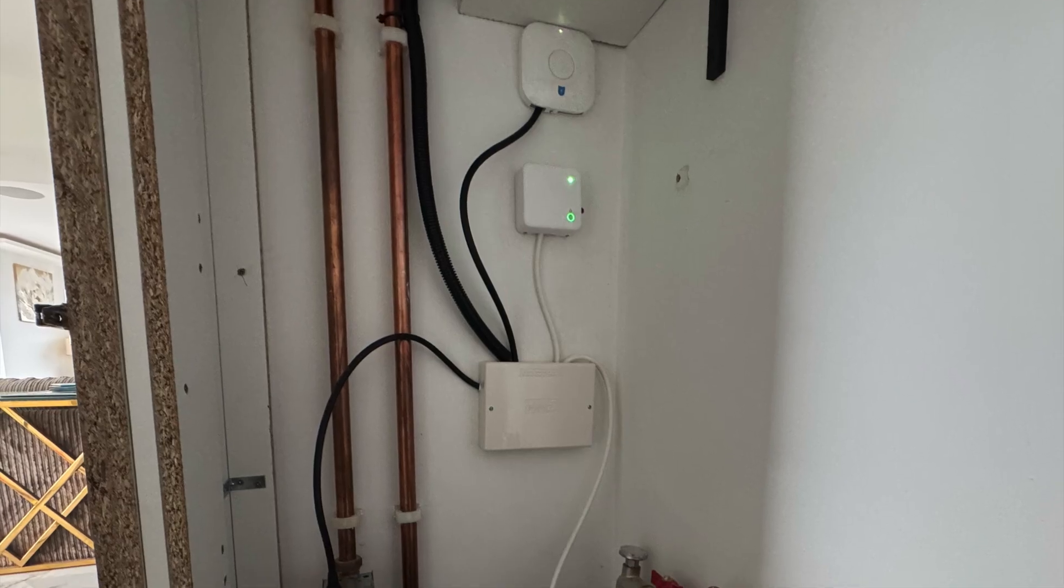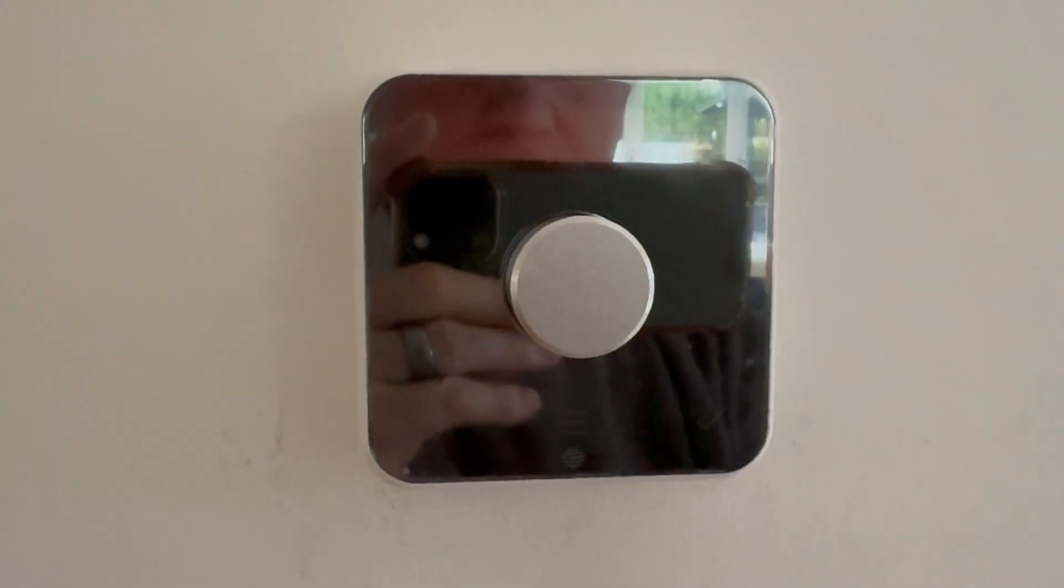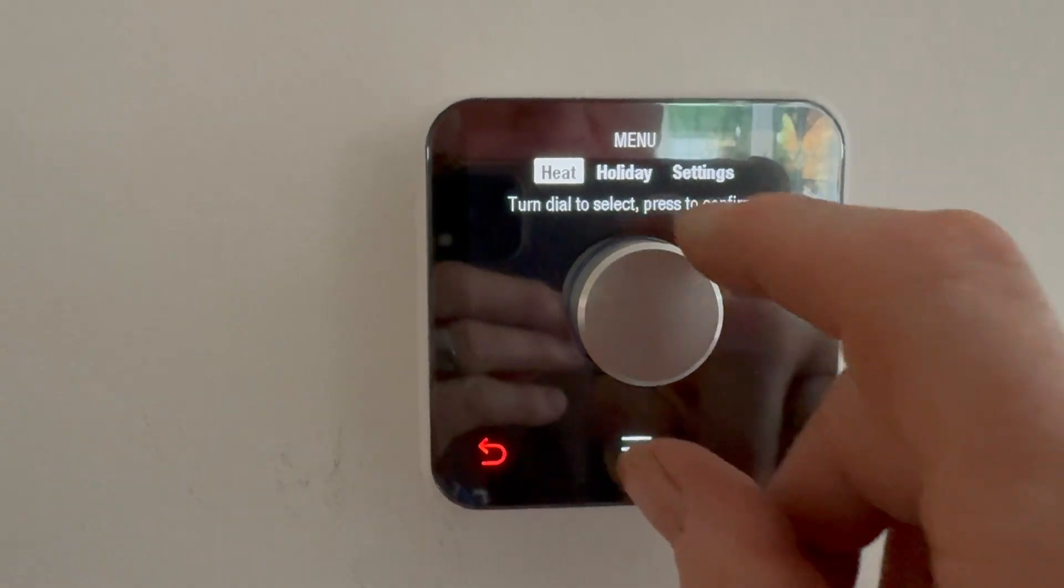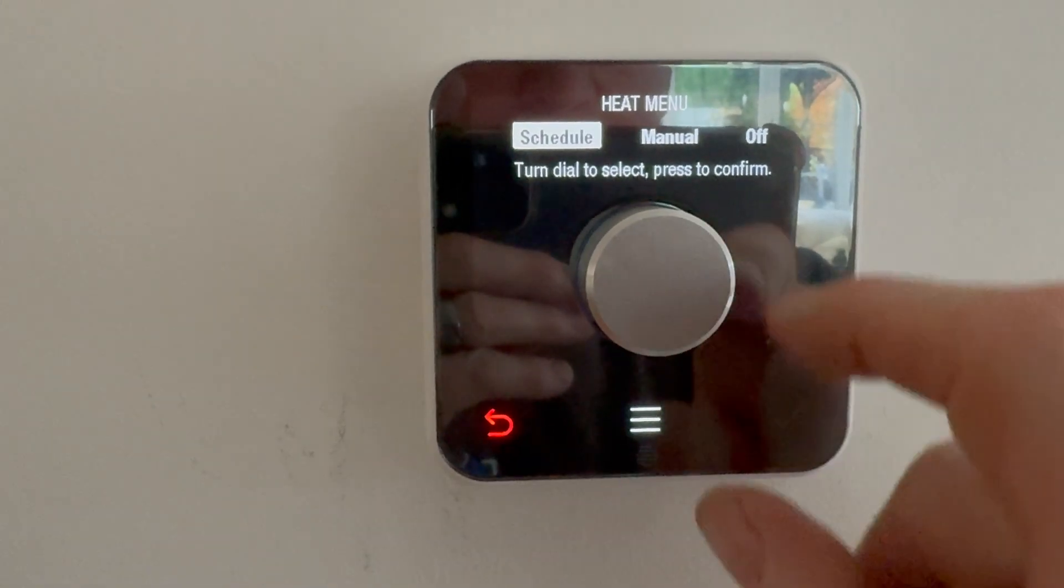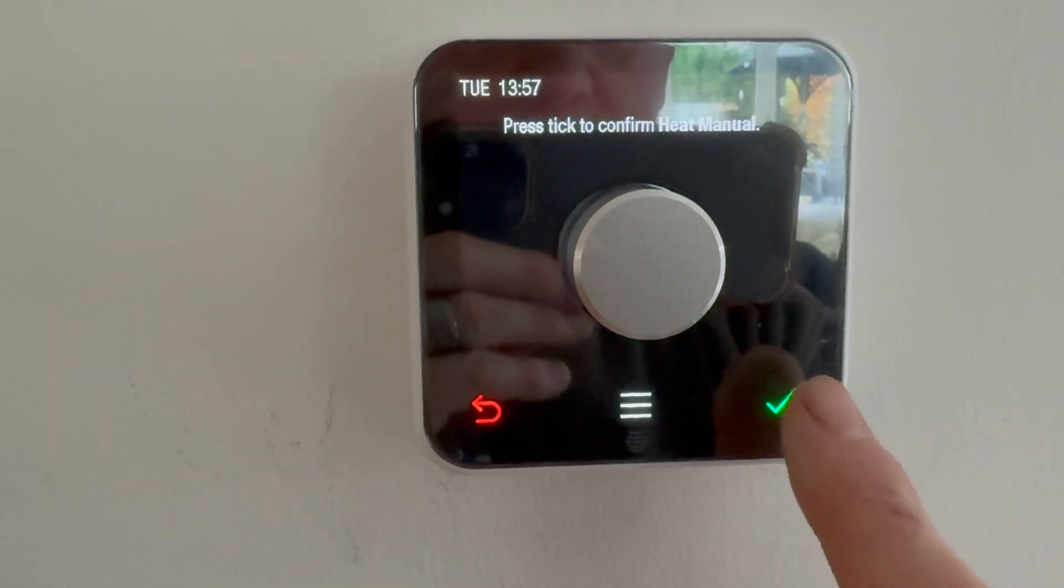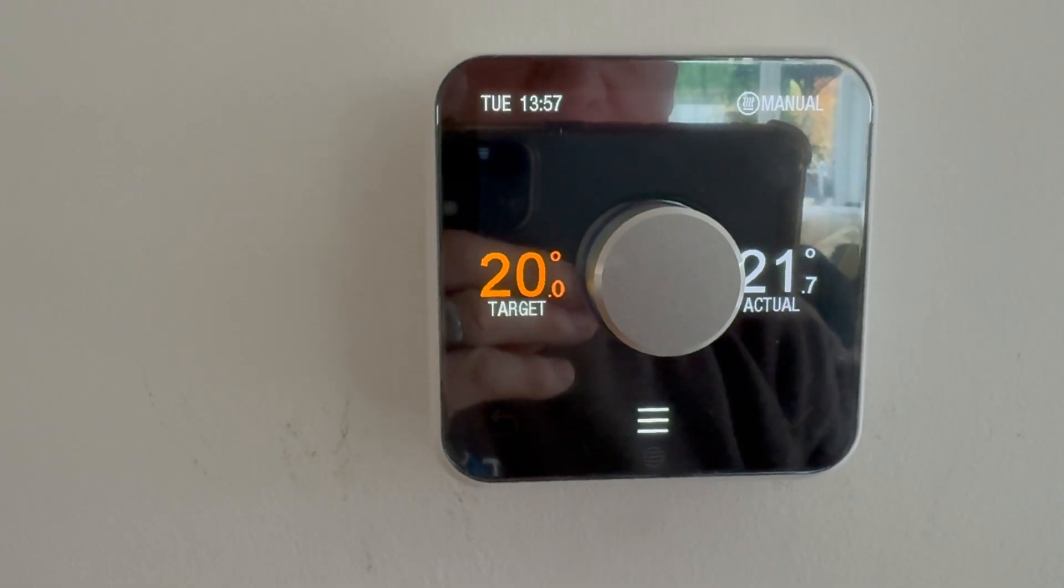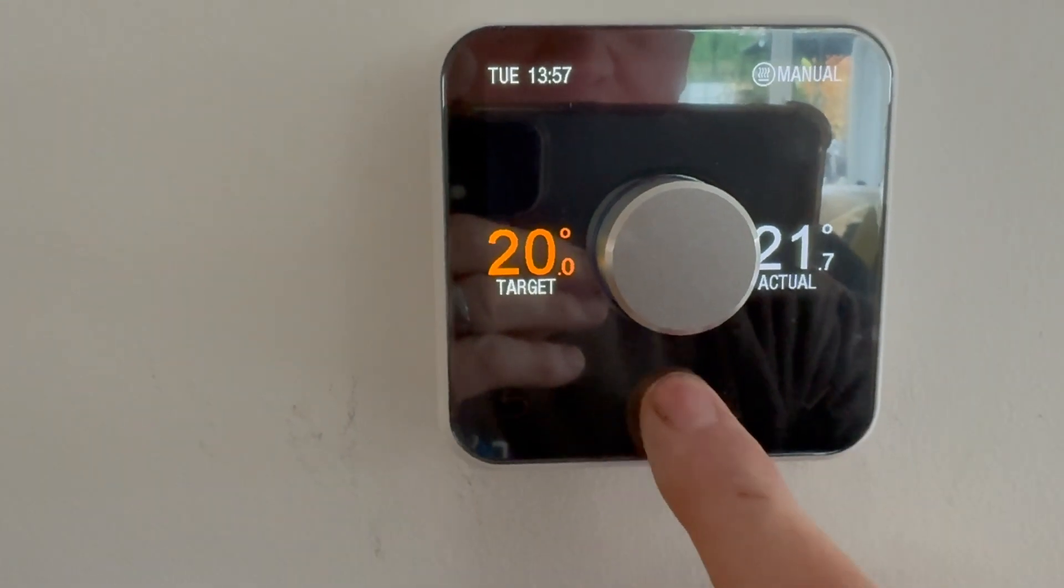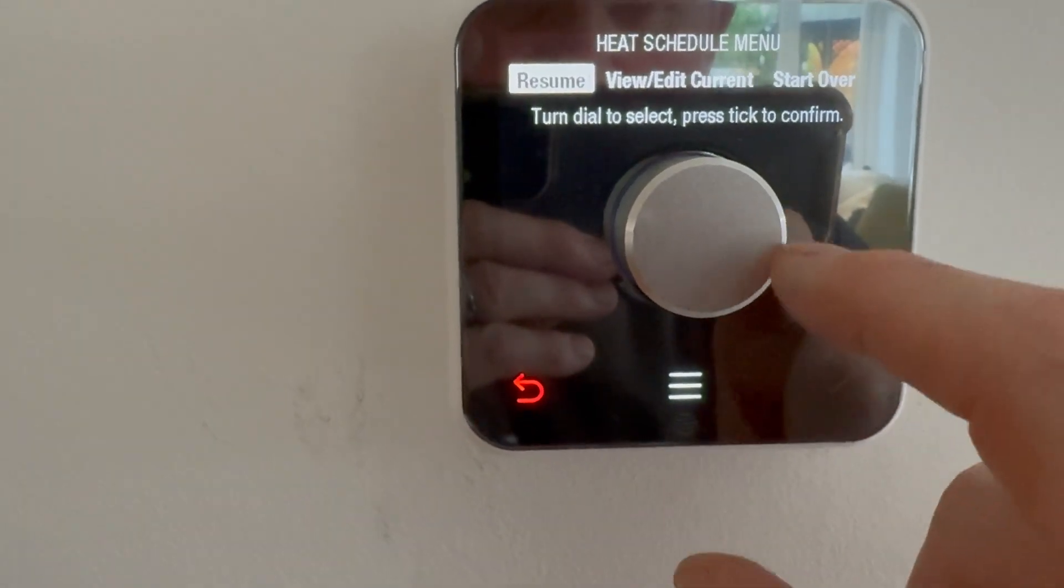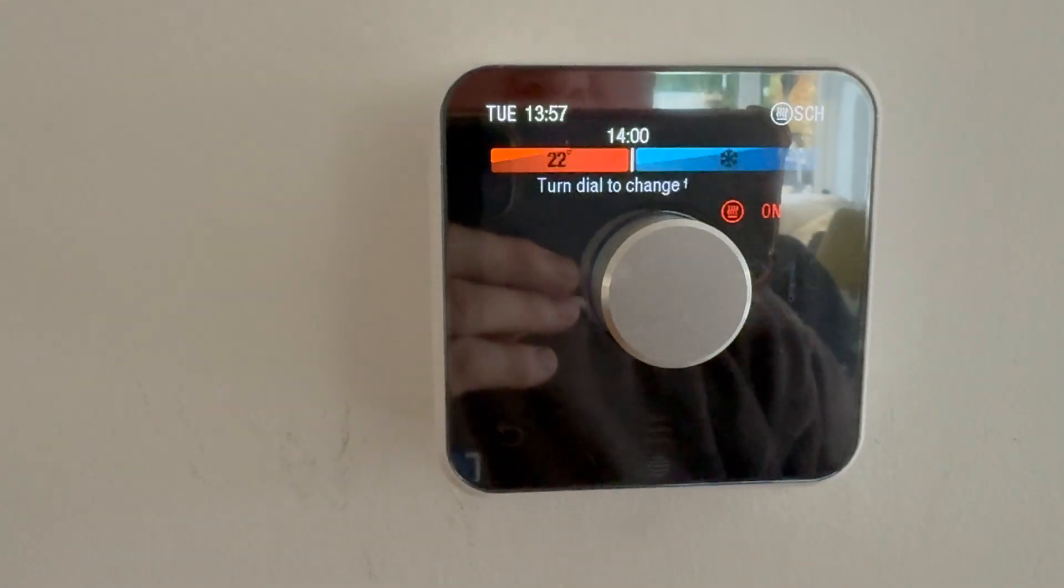Now we can put the cover back on the wiring center and show the customer how to work the thermostat. Press the middle button to wake it up. It's showing the room temperature. Press these three little lines. It's on heat. We press that again. We're going to turn it to manual setting. Press that. Press the green tick. And we're now in manual mode. To put it back in schedule, press the three buttons. Press the schedule. Press resume. And press the green tick. It's easy as that.